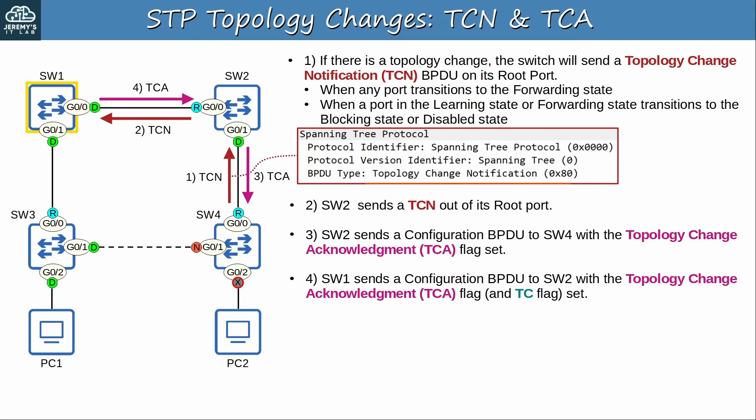Switch 1, the root bridge, will then acknowledge switch 2's TCN. Switch 1's TCA also has the TC topology change flag set, and we'll look at that soon. As a side note, a switch that has sent a TCN will send one every hello interval until it receives a TCA. However, it should receive the TCA almost instantly, so in most cases the switch should just send one TCN BPDU.